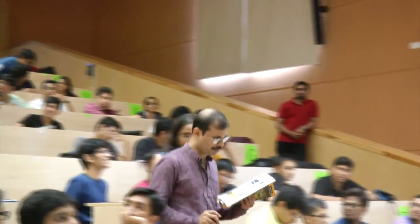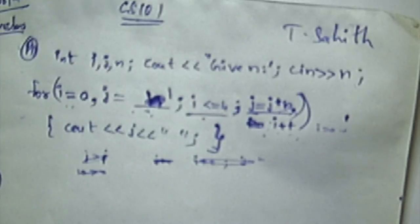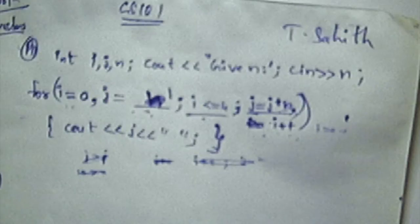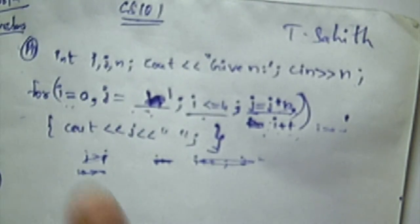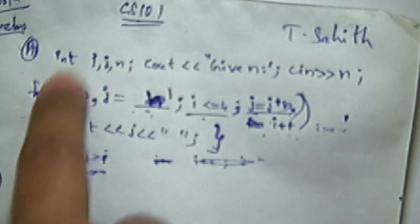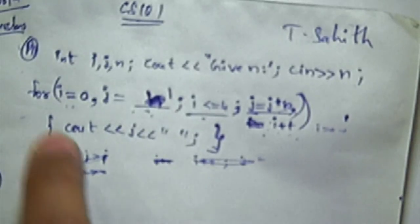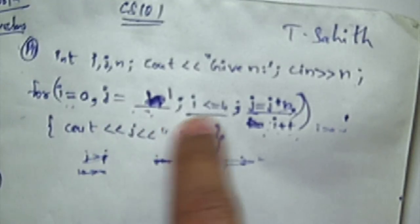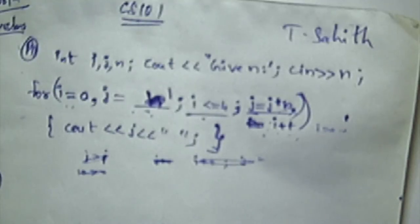Interestingly, almost everybody has come up with a very similar-looking solution: i = 0, j = 1, condition i <= 4, update j = j * n and i++. Is this correct? No — j = 1 is wrong. Why? Because this initialization is evaluated only the first time. When j is assigned 1, the first iteration prints 1 regardless of what n you input. The fix is to initialize j to n.